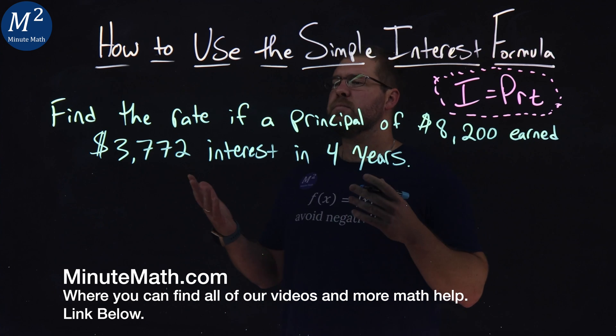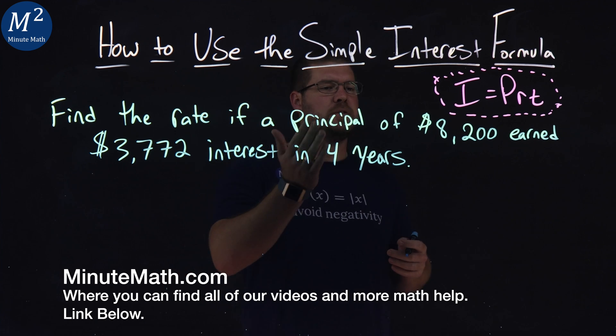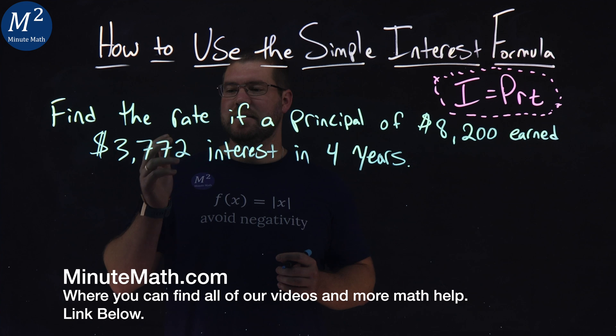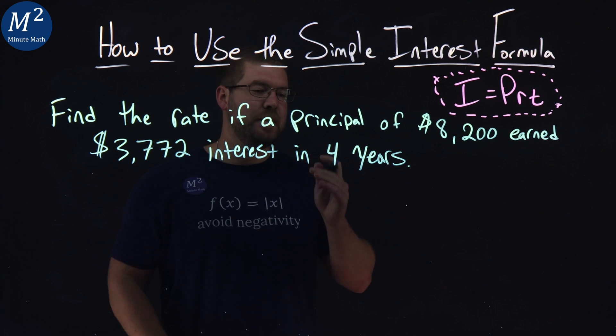We're given this problem right here: Find the rate if a principal of $8,200 earned $3,772 in interest in four years.